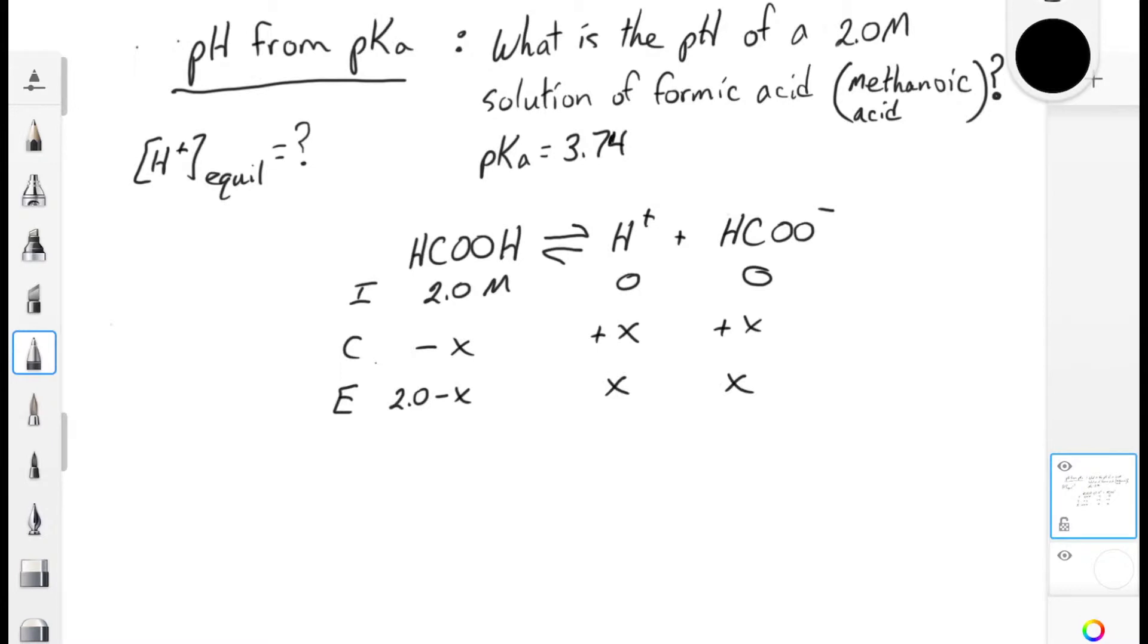The structure of our ICE table involves an initial concentration of formic acid, and prior to dissociation, the concentrations of H-plus and formate are both zero. The stoichiometry dictates that the concentration of formic acid will go down by X, and the concentrations of H-plus and formate will go up by X. We need our H-plus concentration at equilibrium if we're going to solve for the pH, and that means we need to have a Ka expression.